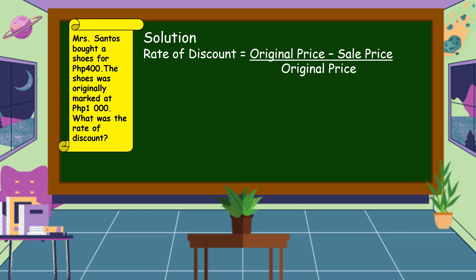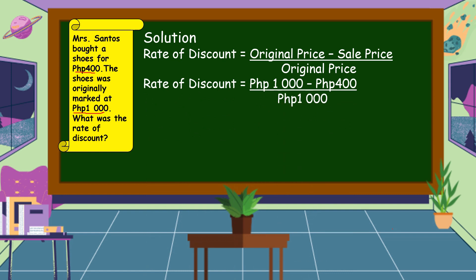Reading the problem again: Mrs. Santos bought shoes for 400 pesos — so 400 pesos is the sell price. The shoes were originally marked at 1,000 pesos — so 1,000 pesos is the original price. Let's put the given amounts into the formula: (1,000 pesos − 400 pesos) ÷ 1,000 pesos.